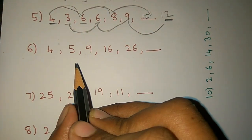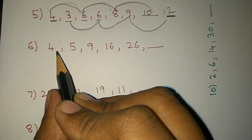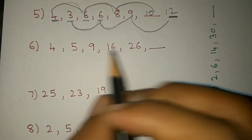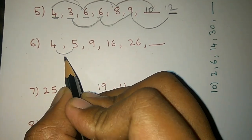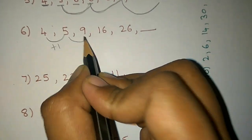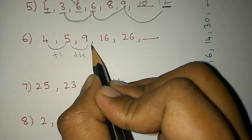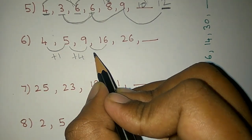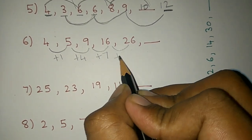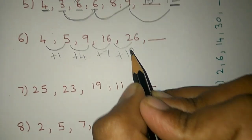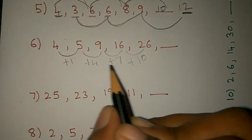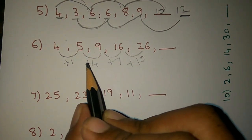Next example: 4, 5, 9, 16, 26. First differences are: plus 1, plus 4, plus 7, plus 10. The differences themselves are not constant, so we look further.